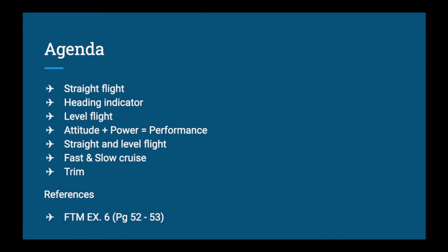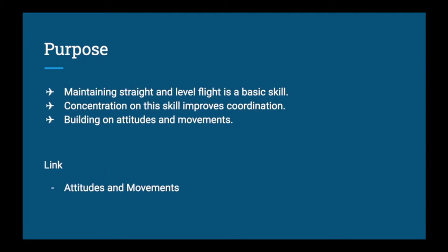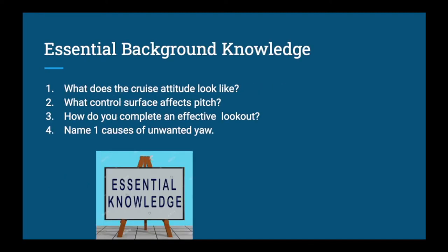Your reference for this lesson is the Flight Training Manual Exercise Six. The goal of this lesson is to teach you how to fly at a constant heading and at a constant altitude. You'll also get introduced to different attitude and power settings. This is another basic skill you need to learn in order to fly to a destination — to fly from point A to point B, you must be able to fly a constant heading and maintain your altitude.